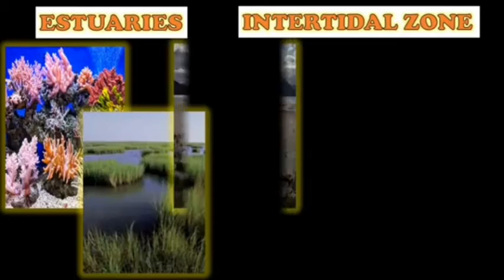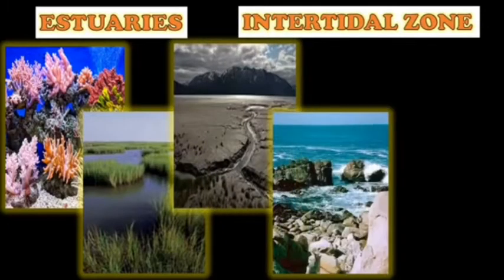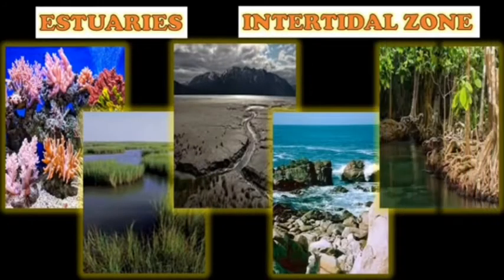The aquatic ecosystems are the estuaries and intertidal zones. Specifically, it comprises of all our coral reefs, salt marshes, mudflats, rocky shores, and mangrove forests.